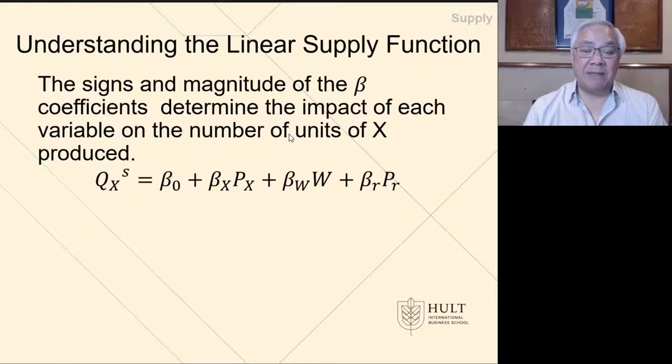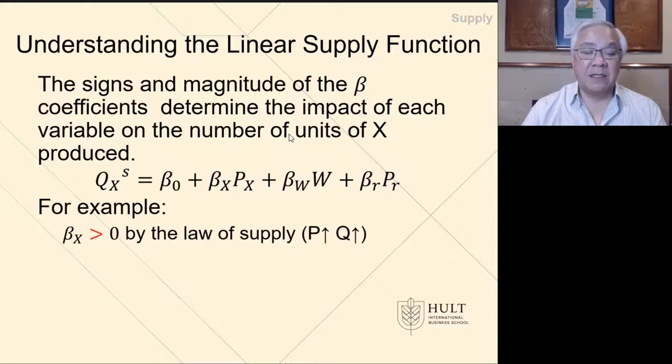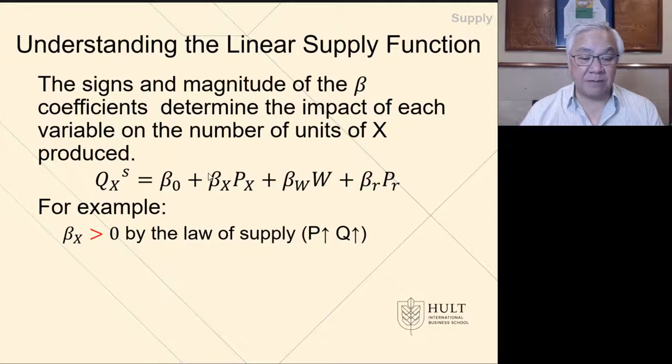When we look at the signs and magnitude of the betas, similar to alphas, it's relevant for the supply function as well. For example, if we're looking at the price of X, the law of supply holds that if the price of X goes up, then the quantity would go up. So the normal sign of this factor beta X is positive, which means it's the law of supply.